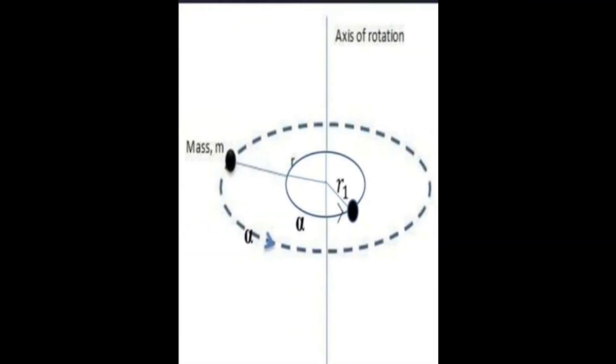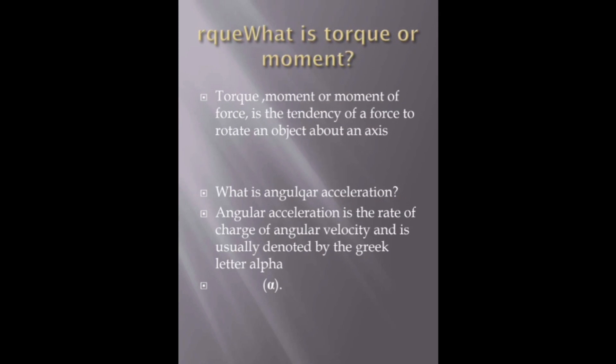The diagram shows the axis of rotation center with two rotations at different radii. Mass is located at different positions relative to the axis of rotation.